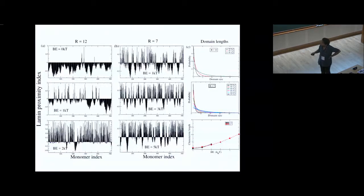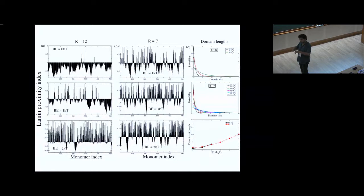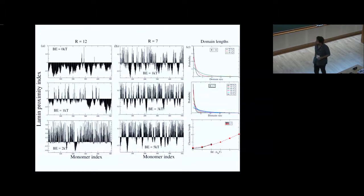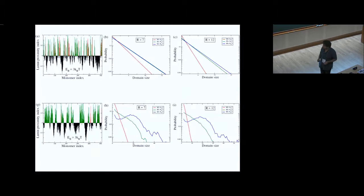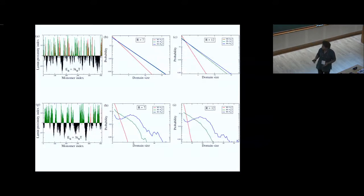Looking at lamin proximity indices which map the DamID experiments: we ask which monomers are in contact with the lamin proteins and construct distributions of lamin associated domains. For a homopolymer where all monomers can attach, the domain length distributions are simple exponentials — which does not match experiments. For a random heteropolymer it also doesn't work well. What actually works is that the lamin associated domains need to be distributed in a Gaussian-like fashion: if you choose LAD lengths from a Gaussian distribution, you get domain distributions that closely match the experimental distributions.